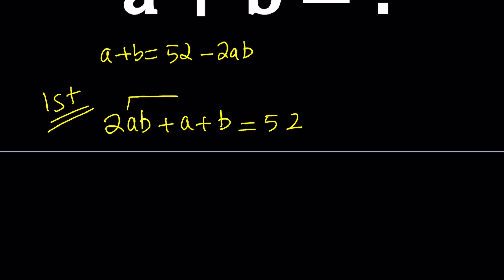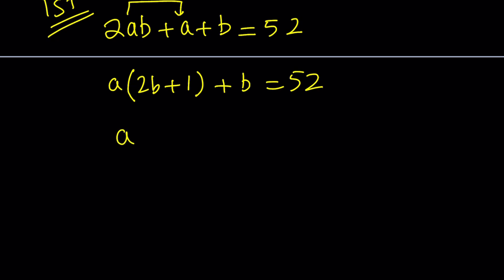Let's go ahead and factor the first two expressions. If I take out an a, I'm going to get a(2b + 1) + b = 52. Then from here, I can subtract b from both sides, and that will give me a(2b + 1) = 52 - b. And then divide both sides by 2b + 1, and now you got a in terms of b. Even though it's not the nicest expression, we're going to turn it into something nicer with some work.